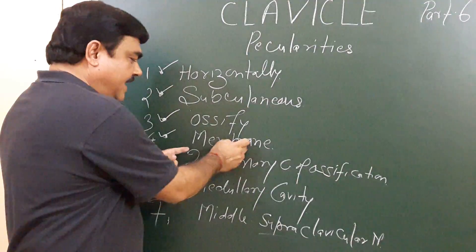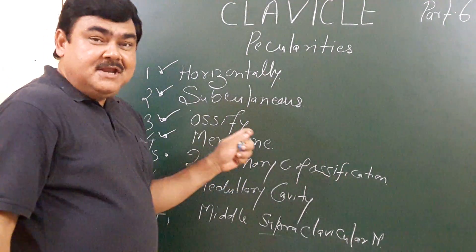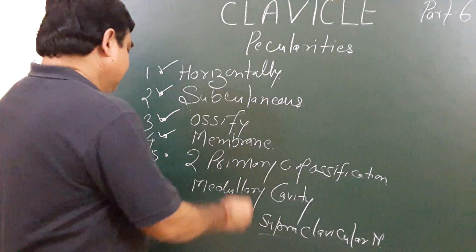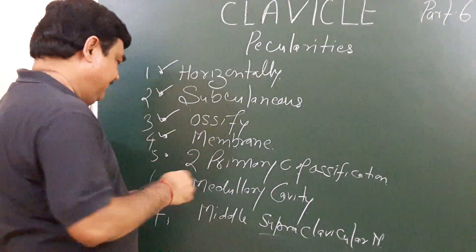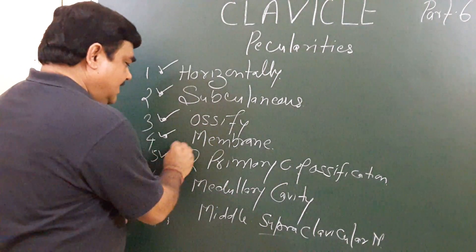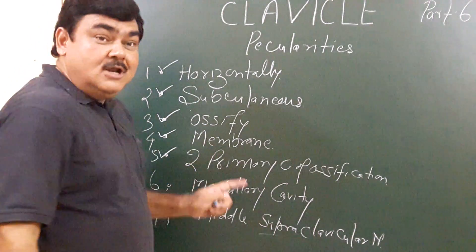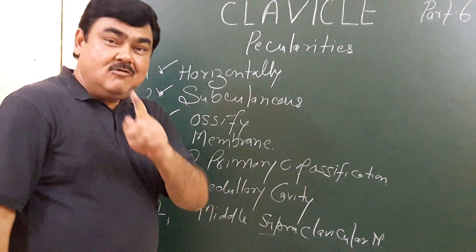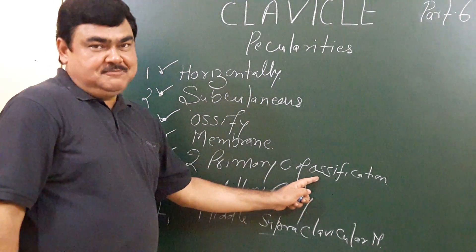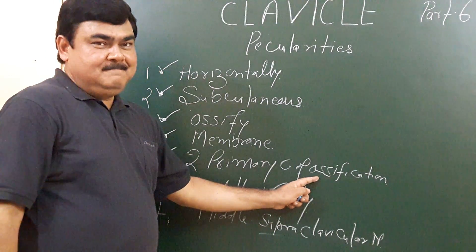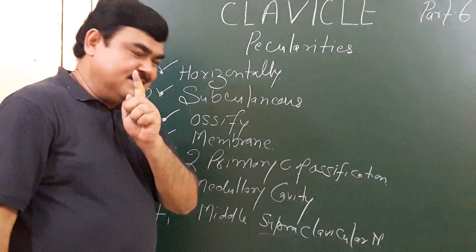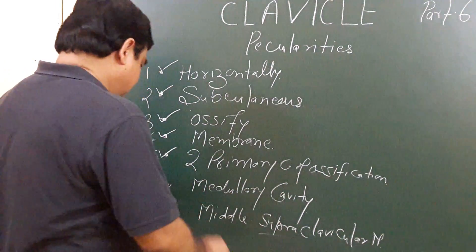The ossification in membrane applies except for the medial end. Another point is that this is the only long bone which has two primary centers of ossification, whereas a typical long bone has only one primary center of ossification.